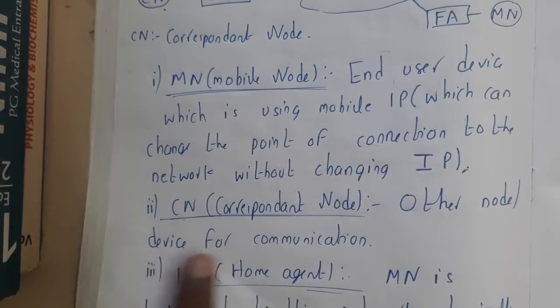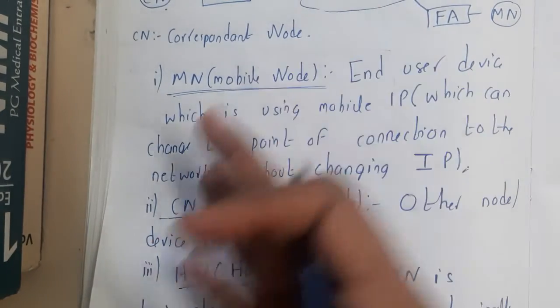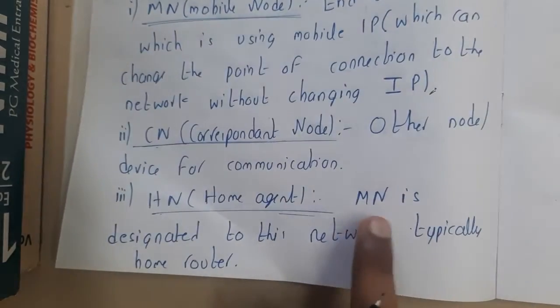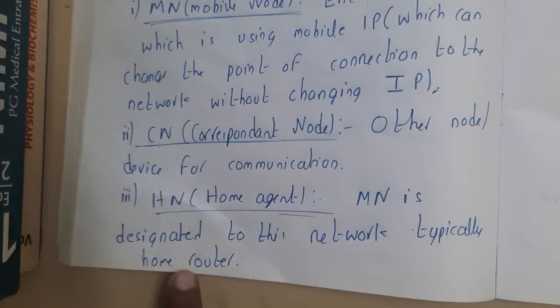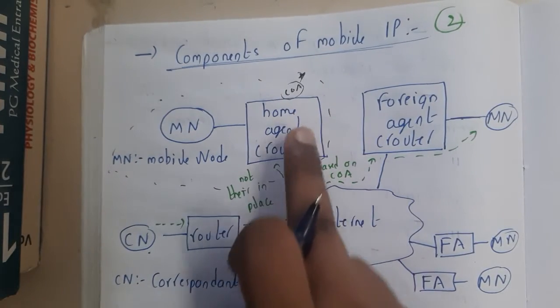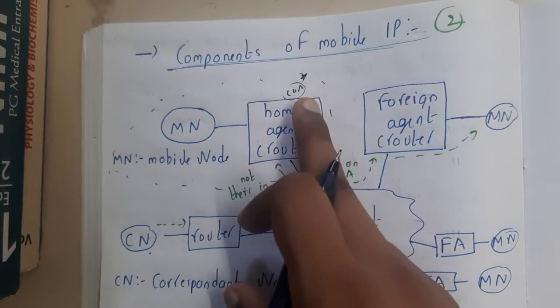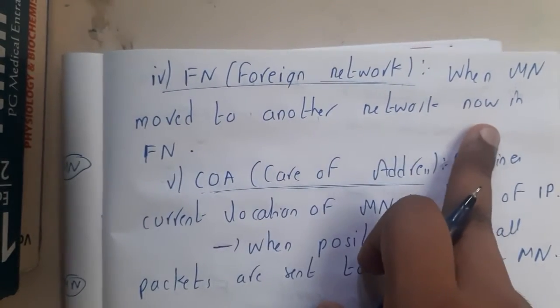CN is nothing but the correspondent node — the other device for communication. Someone should be sending while the other is receiving. HA is the home agent, which is essentially the home router for the MN. It transmits the data directly if the user is at home, otherwise it transmits it to the COA.